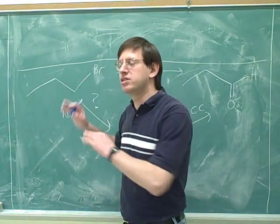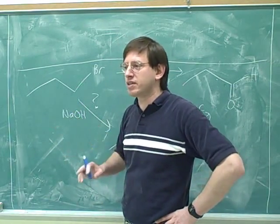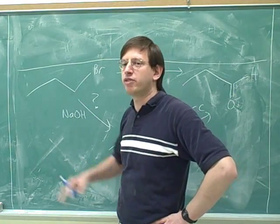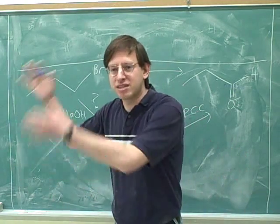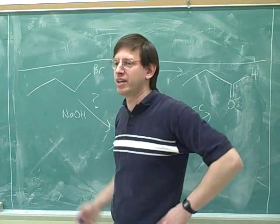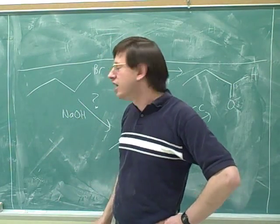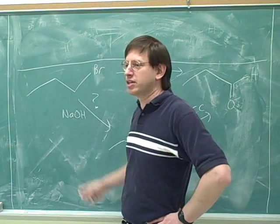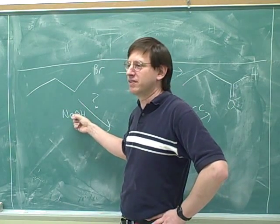Notice how you should compare this with the example we did just previously. If you go back to our previous example, we wanted to form a double bond, so we used the bulkiest O- that we could find. If you want to form a double bond, use a very bulky O-, because that's going to give you elimination. But what if you want to do a substitution reaction? Well, then you use the smallest O- that you can find.